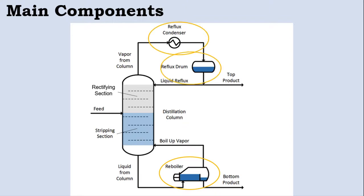Now near the top of the column, we have a condenser to cool and condense the vapors leaving the top of the column as well as the reflux drum. So the top section of the column is mainly known as the rectifying section.